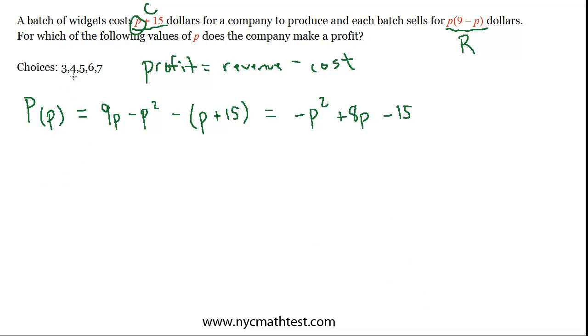So all we have to do is figure out which of these five choices make that expression positive, and we have our answer. We could probably factor this. Let's see, minus, yeah, minus 3 minus 5. Let's do that real quick, actually. If we set this thing equal to 0,